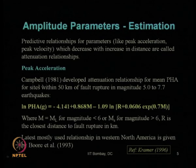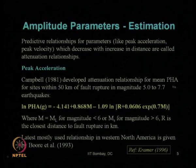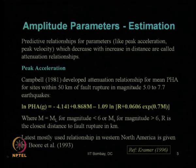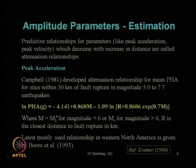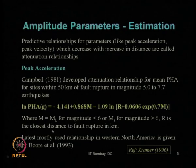The pioneering work proposed by Campbell in 1981 for the North California region shows that the PHA value can be obtained using this attenuation relationship for magnitude range between 5 to 7.7, with site-to-fault source distance within 50 kilometers. In this equation, M is the local magnitude scale for values below 6, and the surface magnitude scale for values above 6. R is the closest distance from the site to the fault rupture in kilometers.